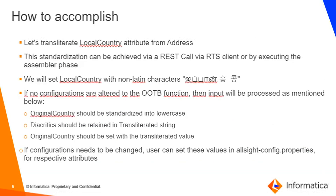Now, how do we accomplish this? As an example, we will use local country as the source attribute from the address. Unlike other standardizations, this can be run via a REST call or by executing the assembler phase — you can ingest all the data in a batch workflow. We will set the local country with a non-Latin character as shown here. If no configurations are altered, the input will be processed and the output will be standardized into lowercase and stored in the field called original country.